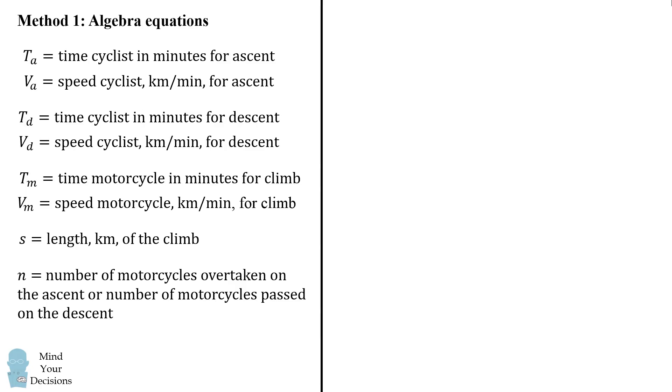So with that setup, let's solve this problem. Because time is equal to distance divided by speed, ta is equal to s over va and tm is equal to s over vm.